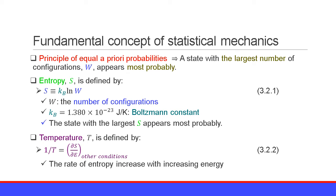The entropy S is defined by the number of configurations W. Namely, the entropy S is defined as the Boltzmann constant Kb times the natural logarithm of the number of configurations W. According to the principle of equal probabilities, the state with the largest entropy appears most probably. The temperature T is defined by the following equation: the inverse temperature is equal to the partial derivative of entropy with respect to the energy. Namely, the inverse temperature is the rate of entropy increase with increasing energy.